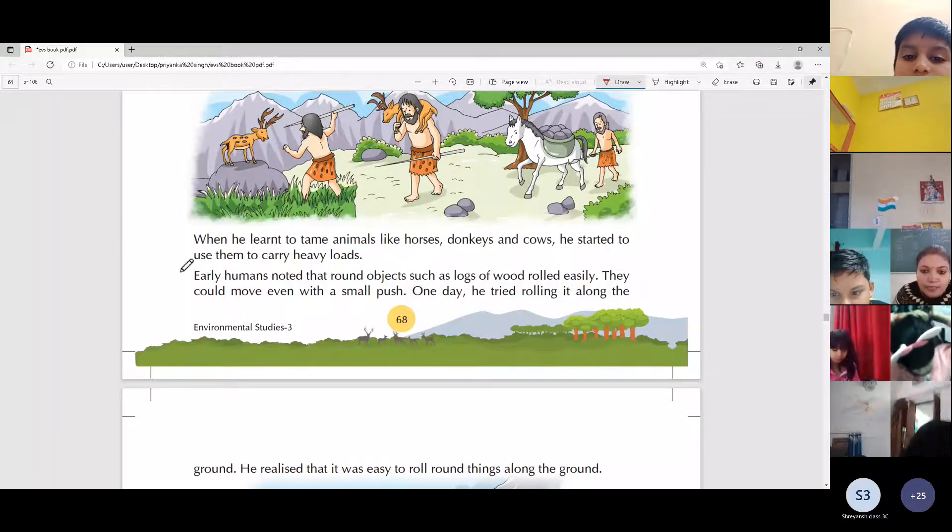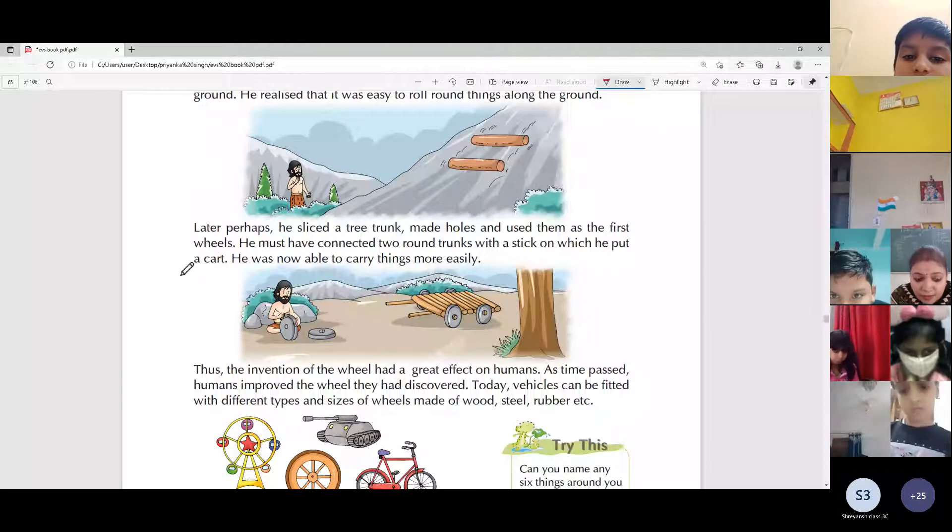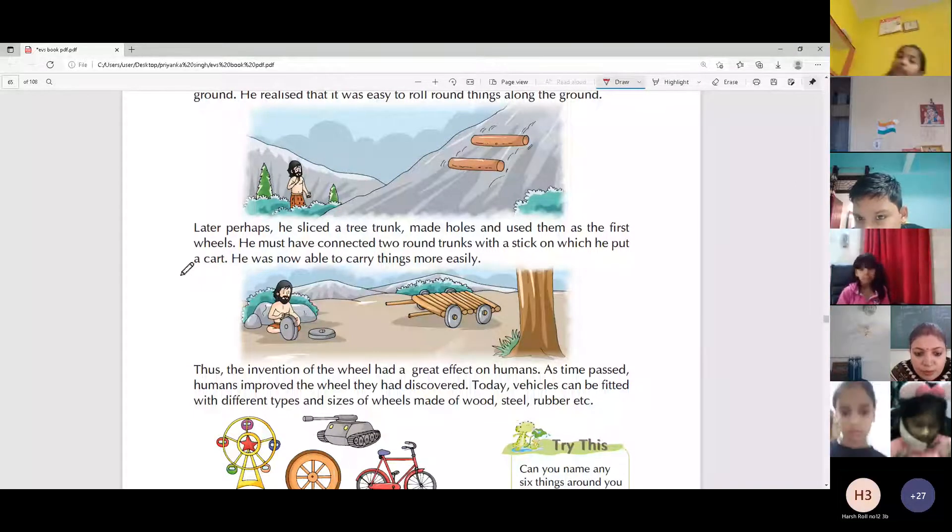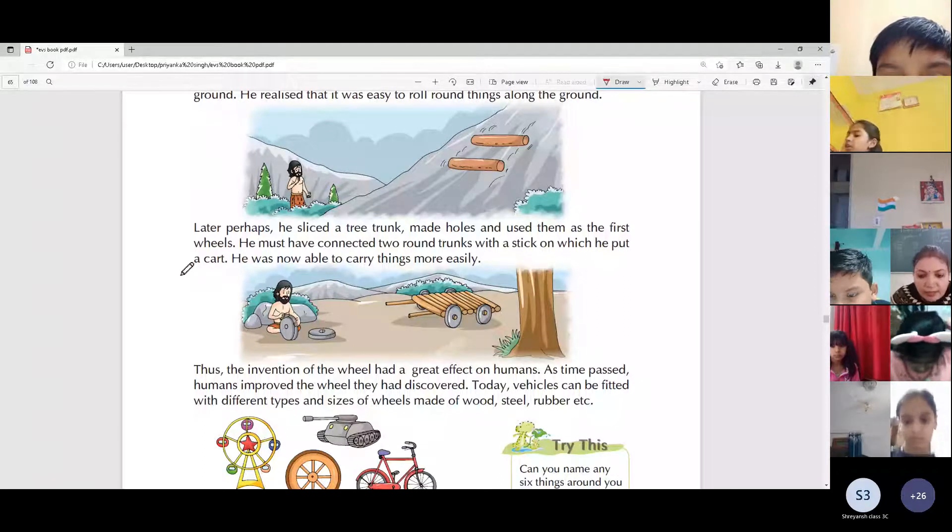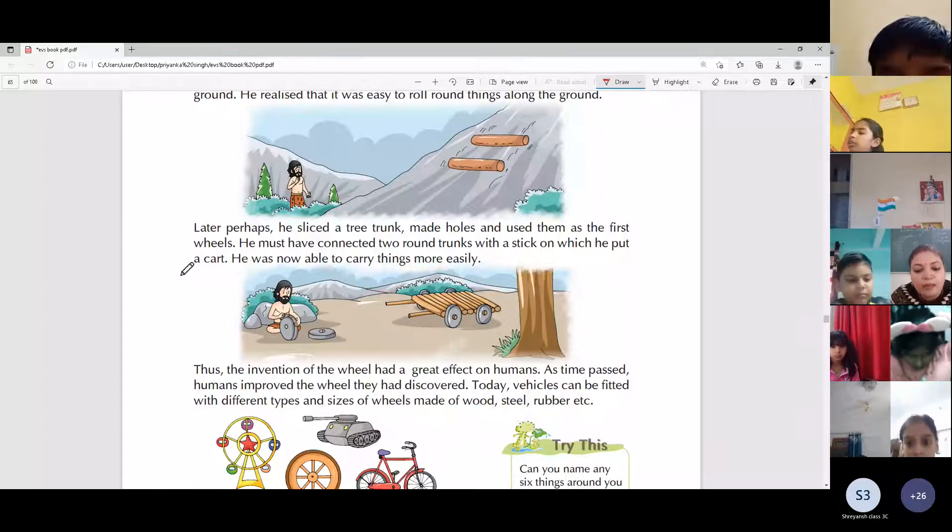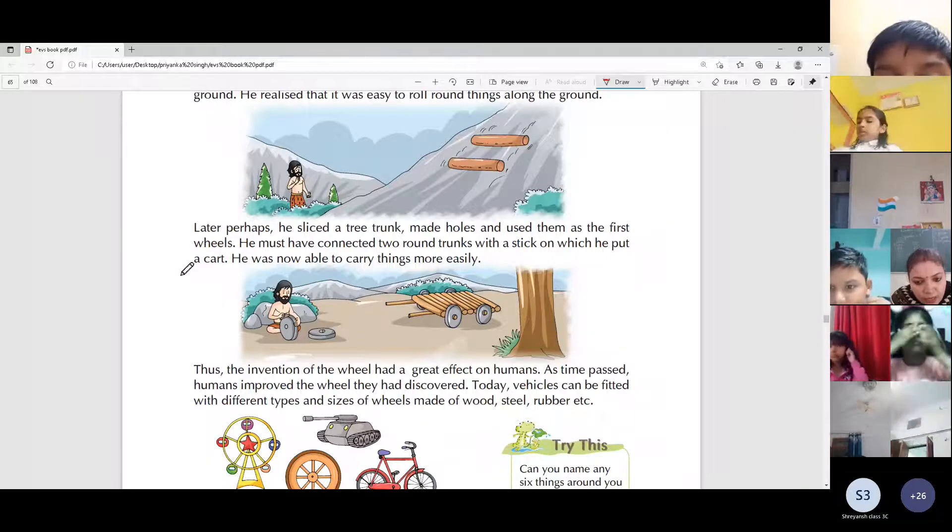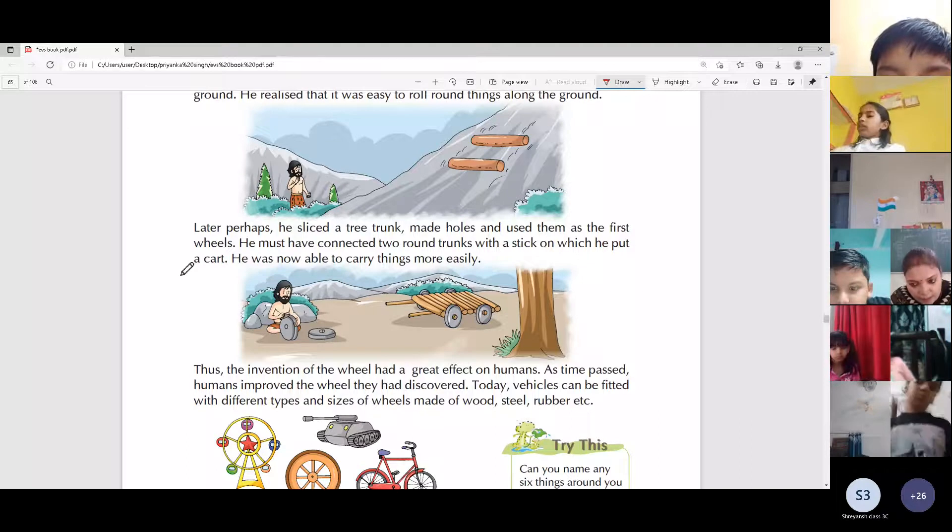Later perhaps, they sliced a tree trunk, made holes and used them as the first wheels. They must have connected two round trunks with a stick on which they put a cart. They were now able to carry things more easily. They made a cart and used wheels. They cut the trunk of the tree and cut it into round slices.